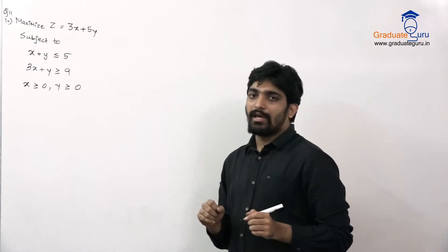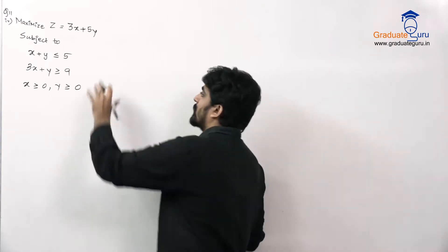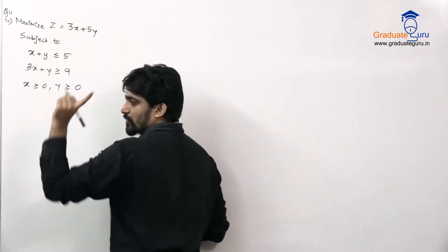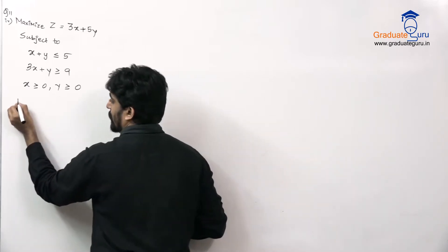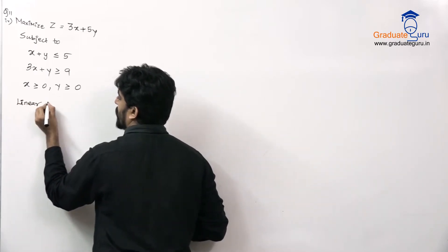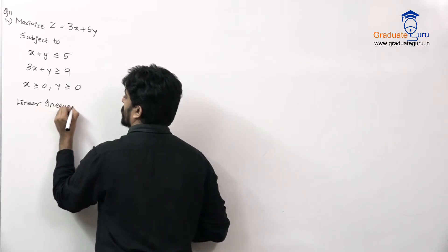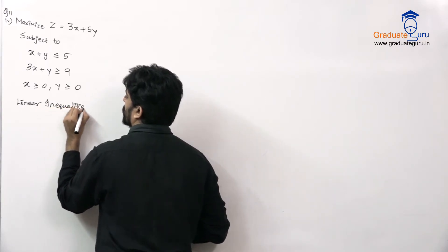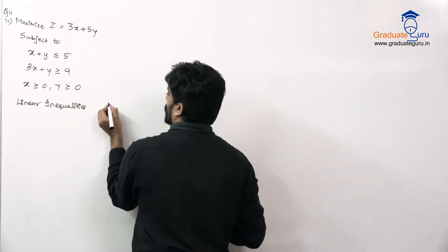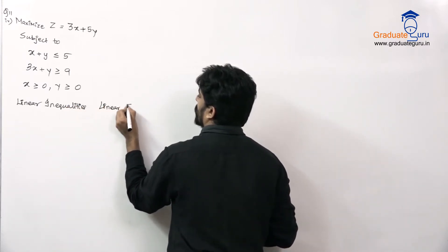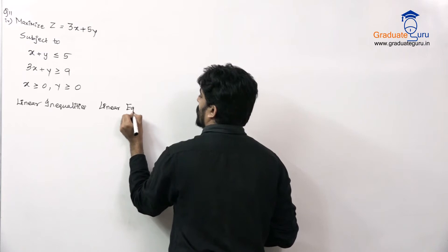These conditions are given. Based on this, we need to find the maximum value of Z. So the first step is to make a table with columns for linear inequalities and then linear equations.